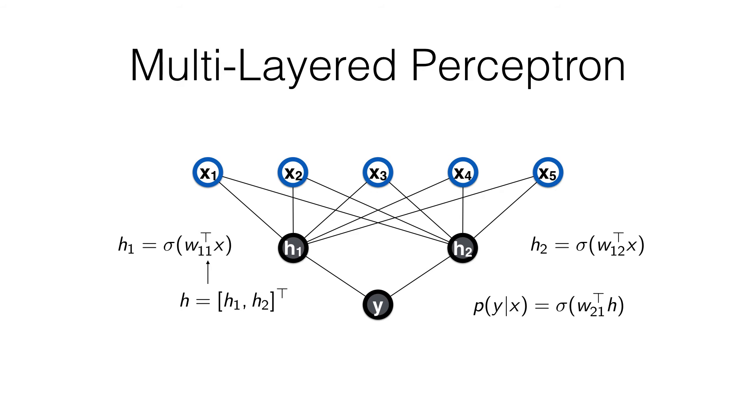I index these in a way that should indicate what layer you're in and which unit you are in that layer. So w11 means you're in the first layer and it's h1, the first unit of the first layer. w12 is the first layer and the second hidden unit. w21 is the second layer and the first unit—there's only one unit.